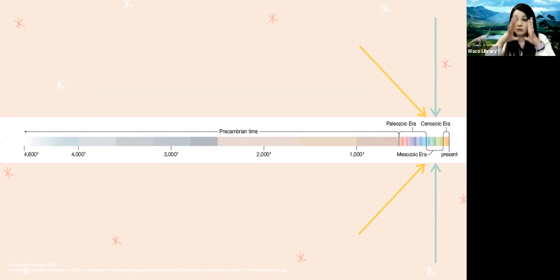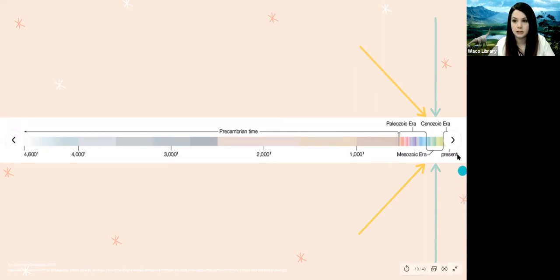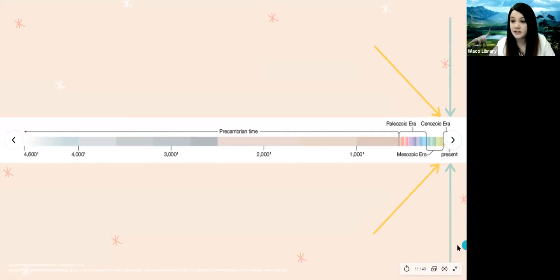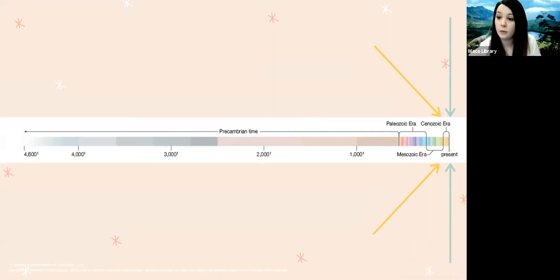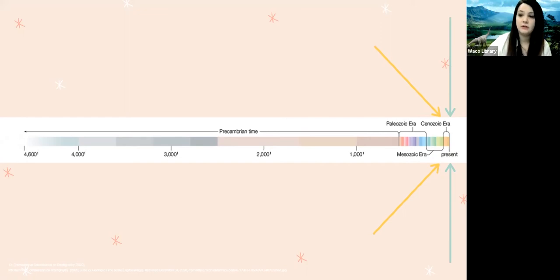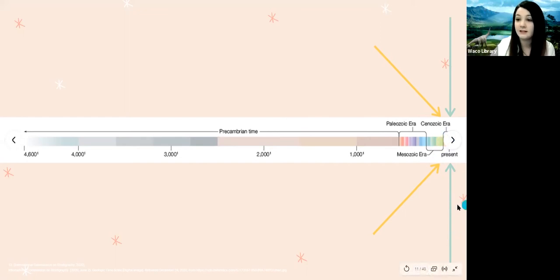I wanted you to see how little time it actually was that dinosaurs were on the earth, even though it seems like a really long time ago. The final era is the Cenozoic era — that's the time we are living in right now. It started 66 million years ago and goes all the way up until today, just a little sliver at the end of the chart.